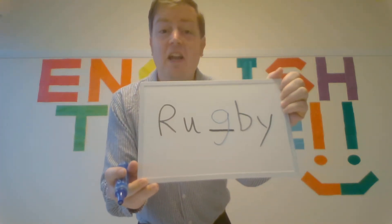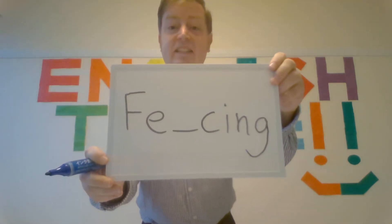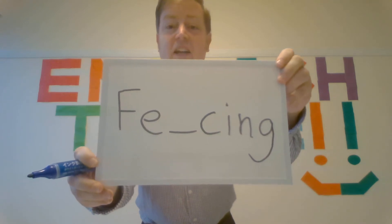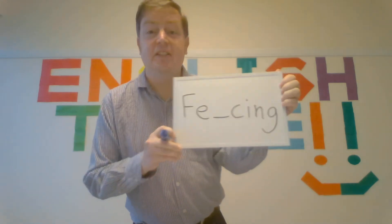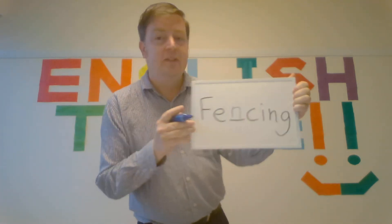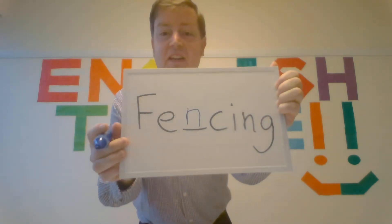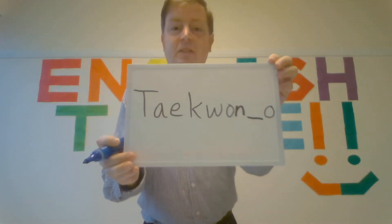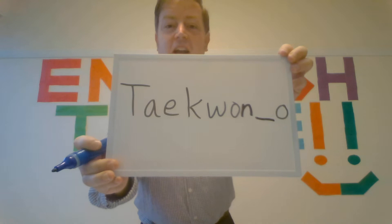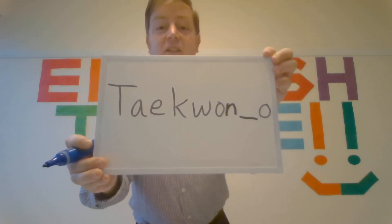Please repeat: rugby, rugby. Very good. Next: fencing, fencing. Five seconds — five, four, three, two, one. The answer is N. So please repeat: fencing, fencing. Very good. And next: taekwondo, taekwondo. Five seconds — five, four, three, two, one. The answer is D.